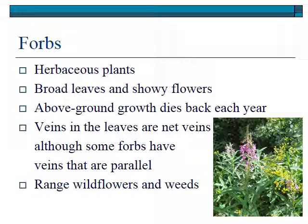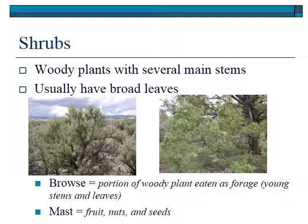Rangeland wildflowers and range weeds are two groups of plants that are usually forbs. Shrubs, on the other hand, are woody — they have a woody stem and usually several main stems, which is what distinguishes them from trees. They usually have broad leaves, though leaves can vary extensively. Browse is the portion of the woody plant that is eaten by animals. Deer, elk, cows, sheep, and goats often eat the young stems and leaves, and those are called browse. Mast is another term — sometimes you'll hear people talk about a mast crop. That's the fruit, nuts, and seeds, usually coming from woody plants.